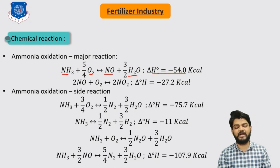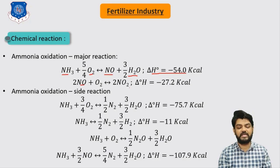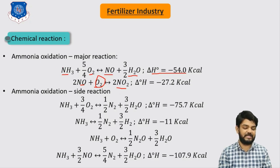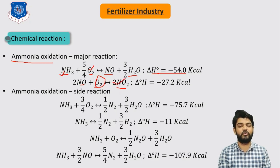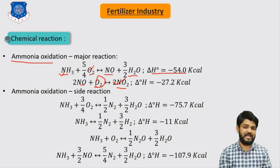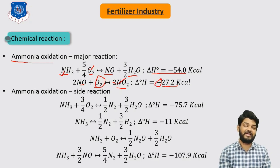This reaction is very exothermic and liberates heat of around minus 54.0 kilocalories. This reaction further produces NO2 with excess oxygen. We can represent this combined reaction as ammonia reacting with excess oxygen to produce 2 moles of NO2. This reaction is also exothermic, producing around 27.2 kilocalories, and the minus sign indicates it is exothermic.